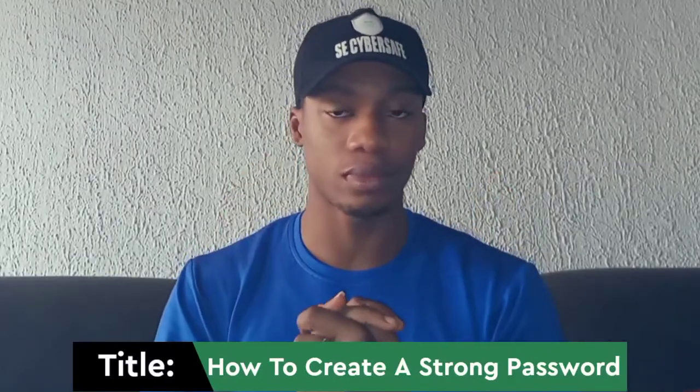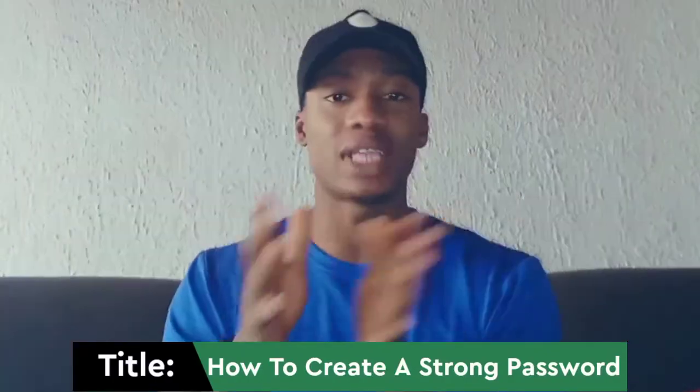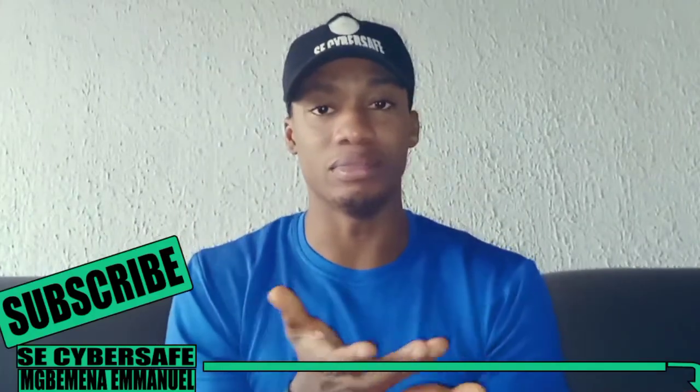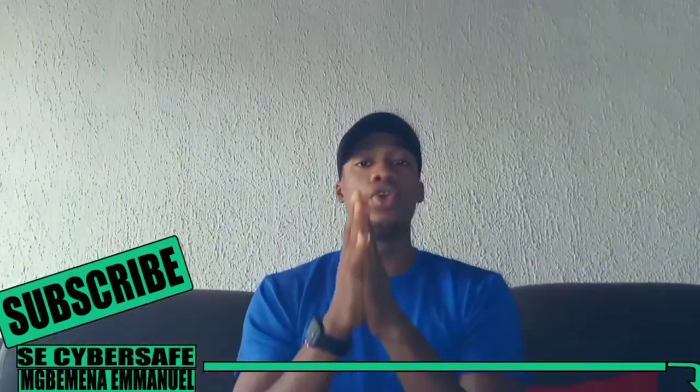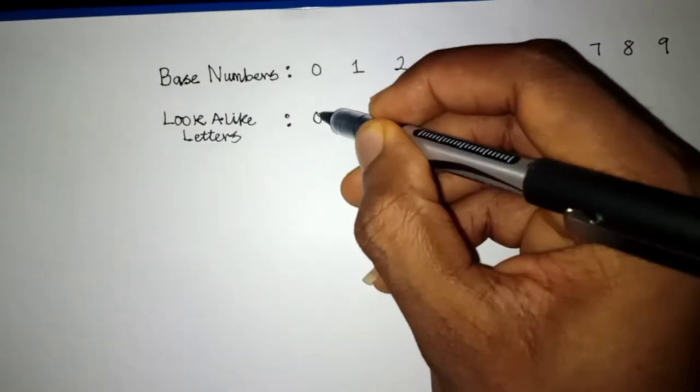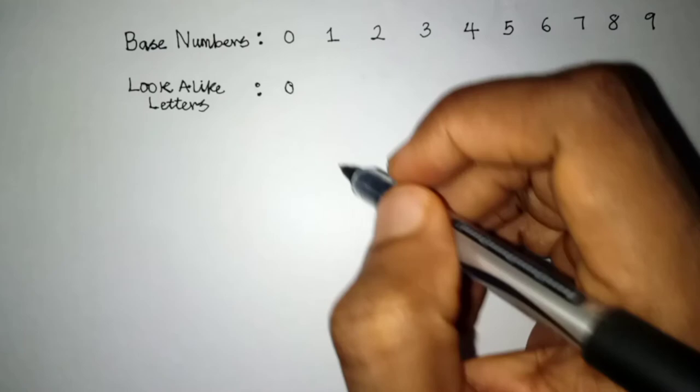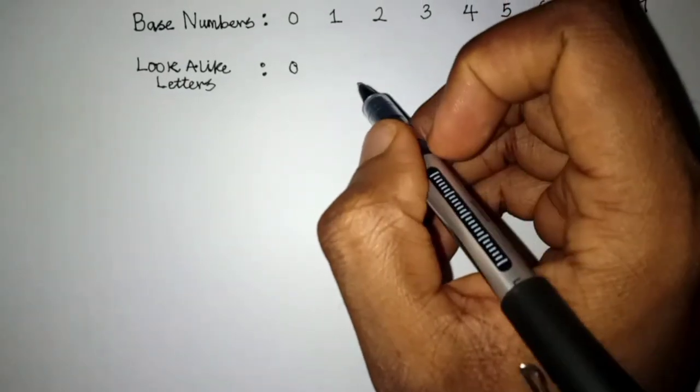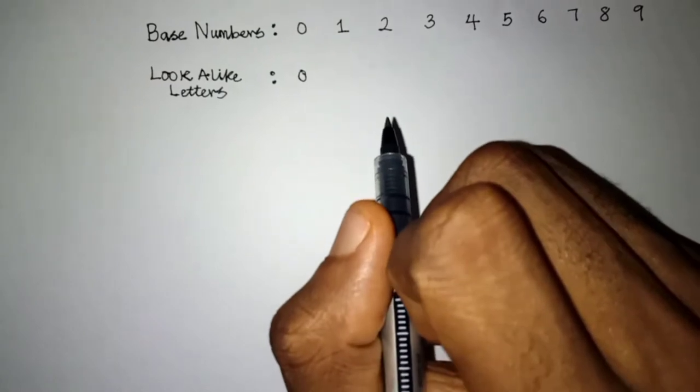Now let's go straight into teaching you how to create a strong password. You know that numbers go from zero to nine — those are the base numbers. Looking at zero: what alphabet does zero look like? The letter O looks like zero. The next number is one — what letter looks like one when capitalized? That's I. Capital I looks like one.